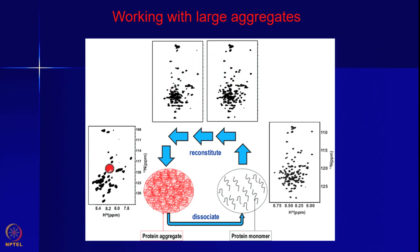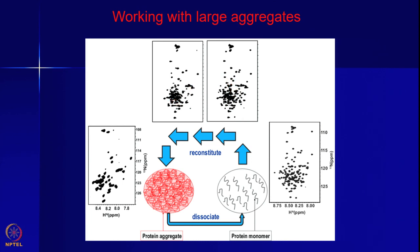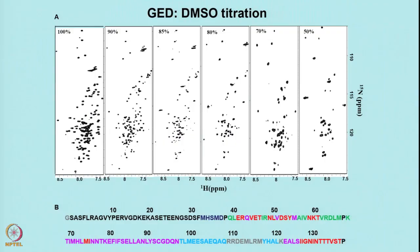A few of those steps are indicated here: from here you go to this, then to this, and finally when you reach here you come back to the situation where you have only a small number of peaks. Throughout this entire process you can monitor the changes in chemical shifts or line widths of individual peaks to tell you which residues are self-associating in a sequential manner. That is the strategy. We monitor changes in line widths and chemical shifts to understand the process of self-association.